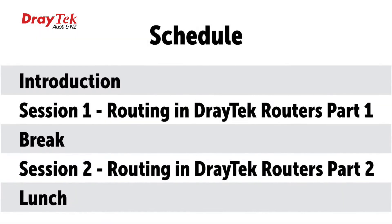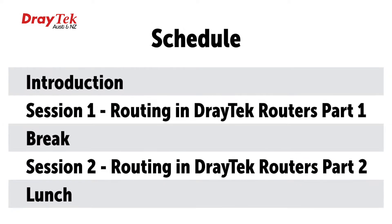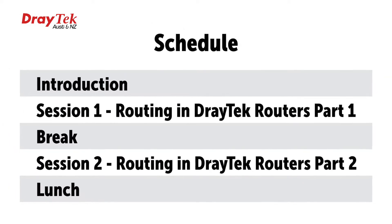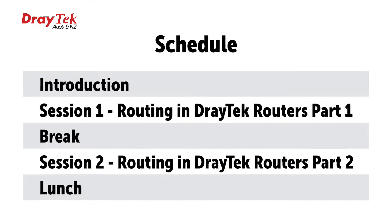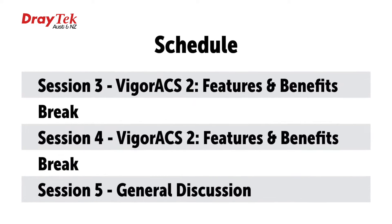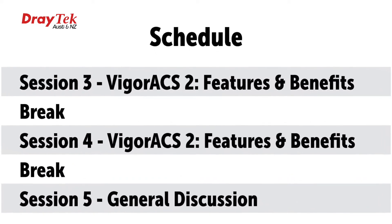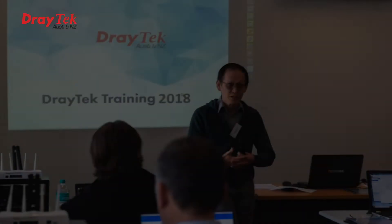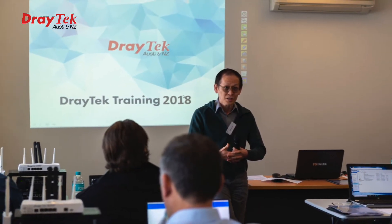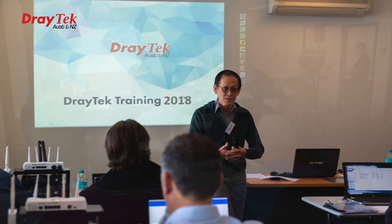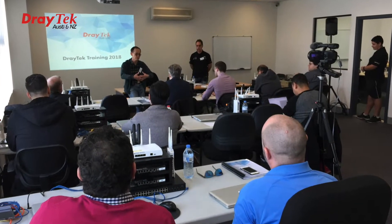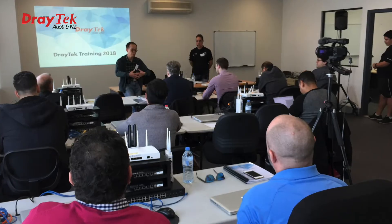This workshop was the second module in the Draytech training workshop series. Two main topics were covered, which were routing in Draytech routers and VigorACS2 auto configuration system. To find out what was covered in our previous workshop, you can click on the link at the top of this video or read about it in the description below.